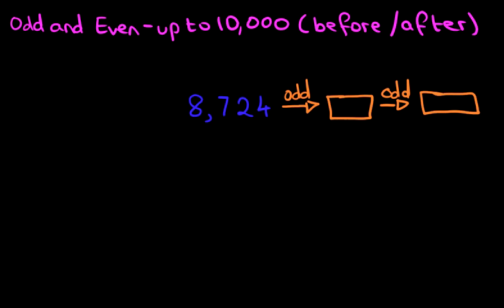The first thing is, let's work out whether the number we have is odd or even. We're going to look at the last digit — 4. Is 4 an odd number or an even number? Well, 4 is an even number. Therefore, the whole number 8,724 is an even number.